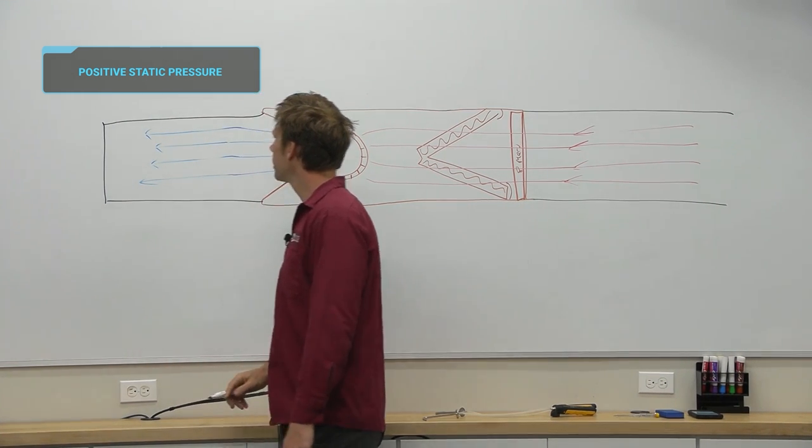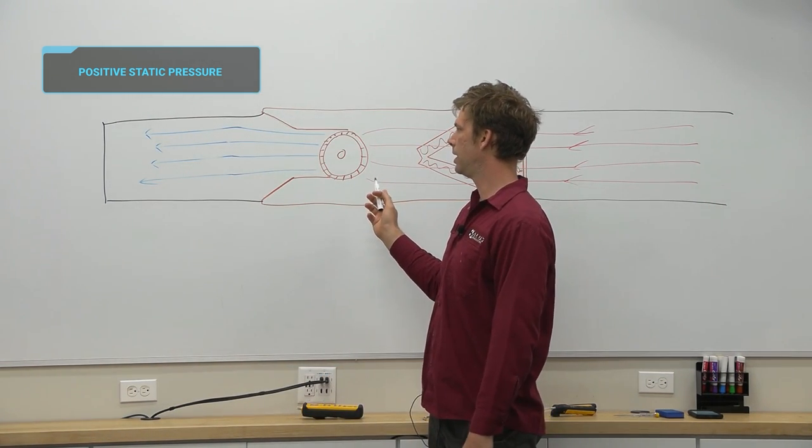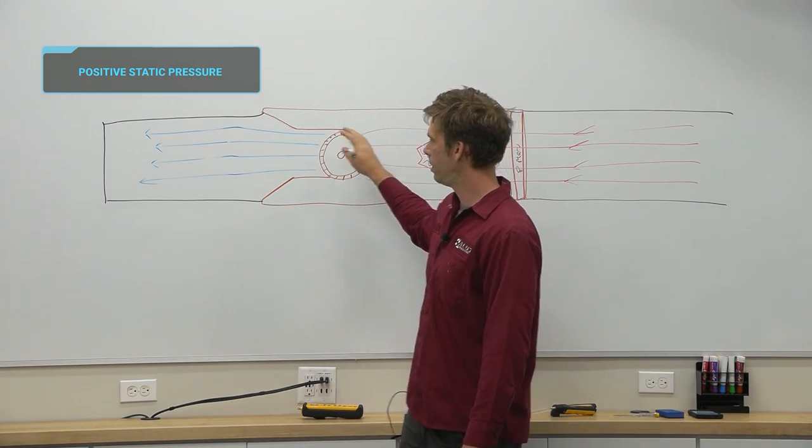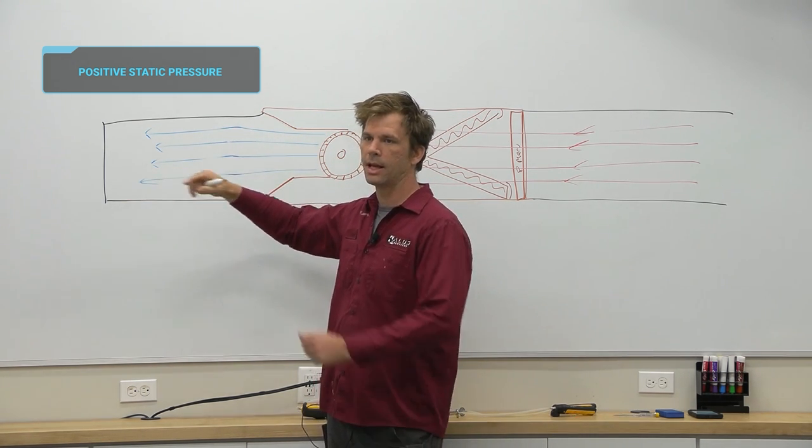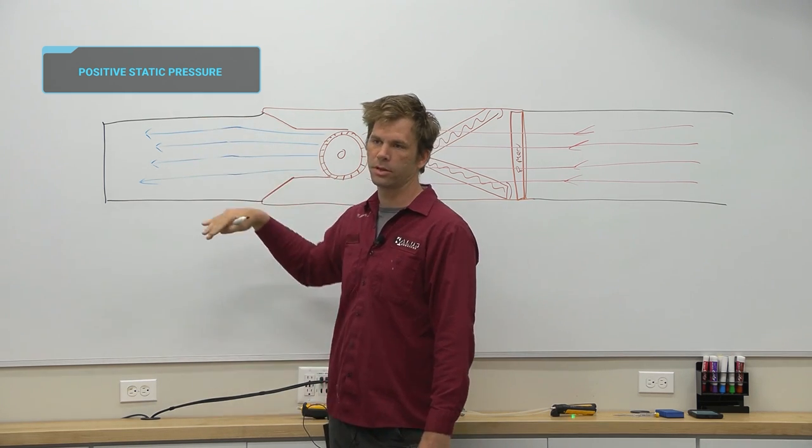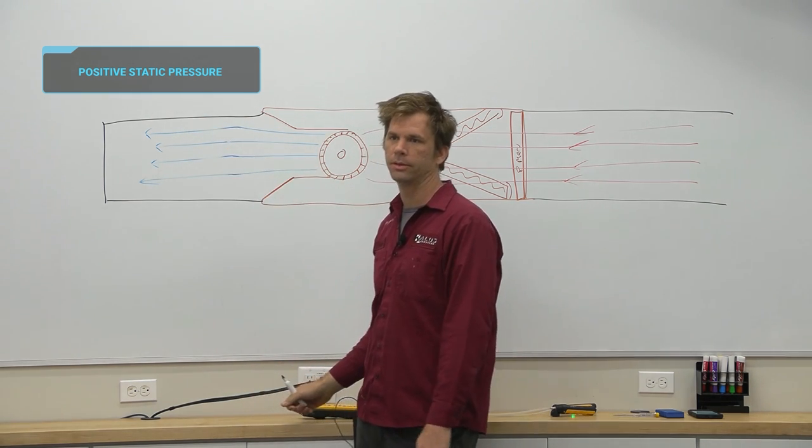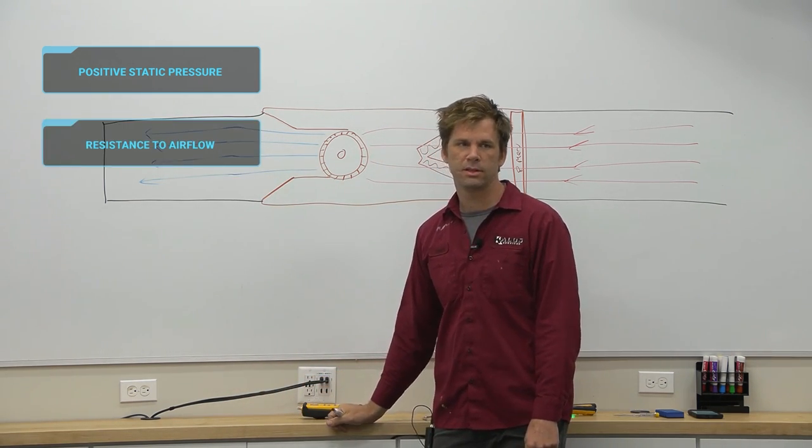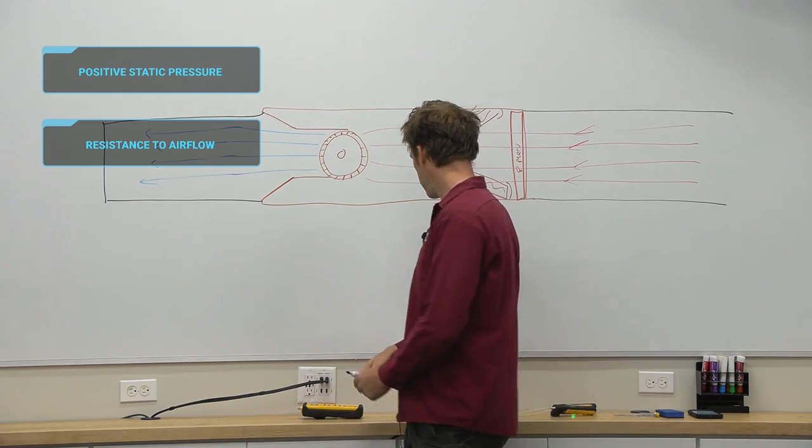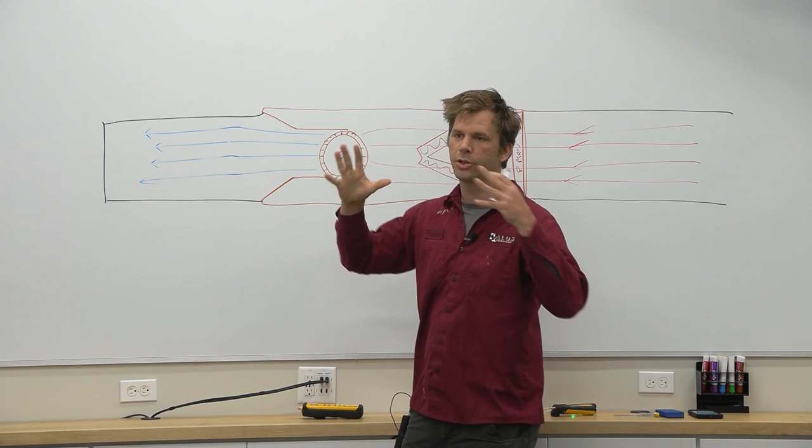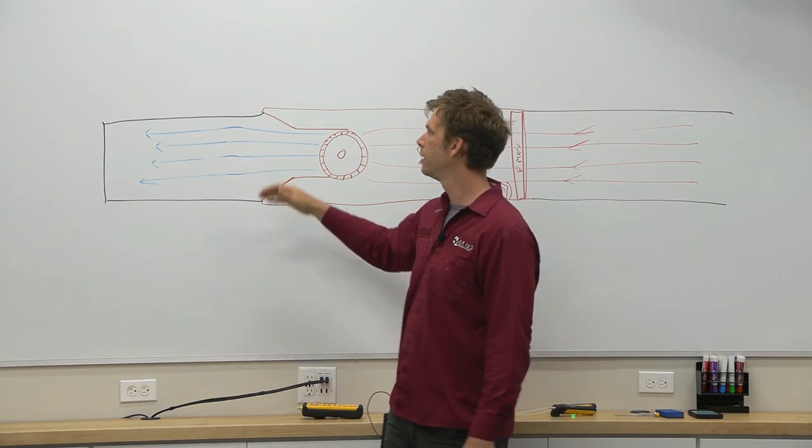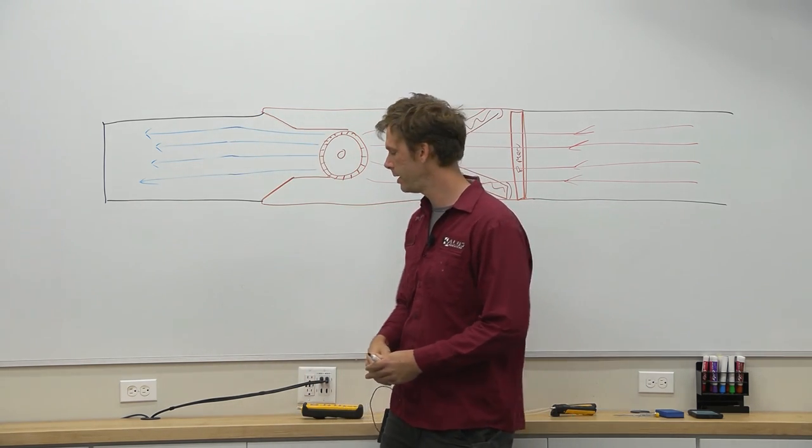If this is my duct work, we turn the unit on, the airflow is going to flow into here, hit a dead end. That pressure pushing against all the different surfaces, that's our static pressure. It's the resistance to the airflow.